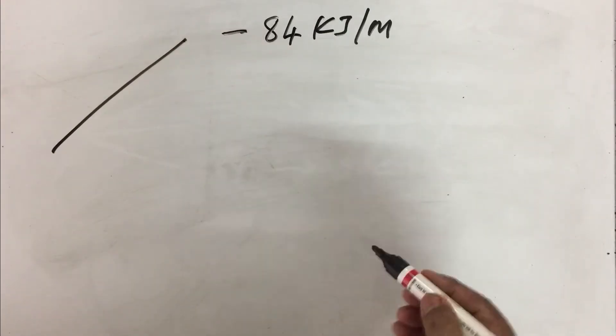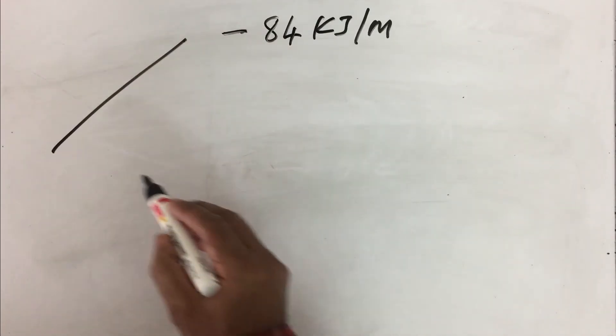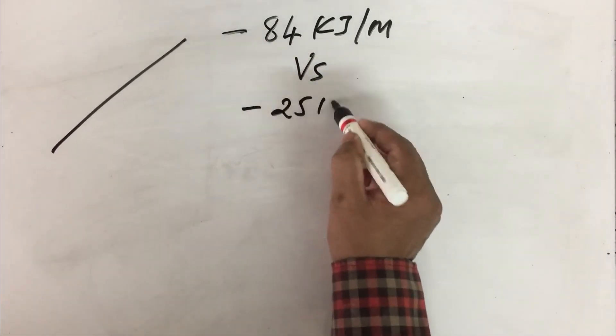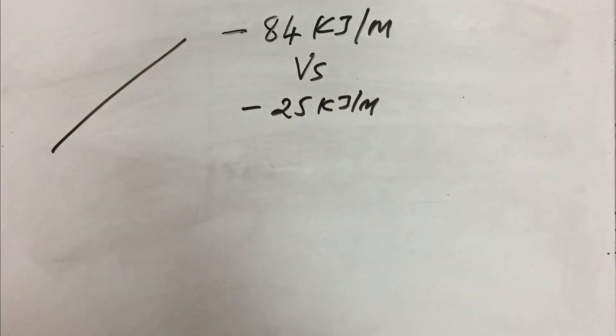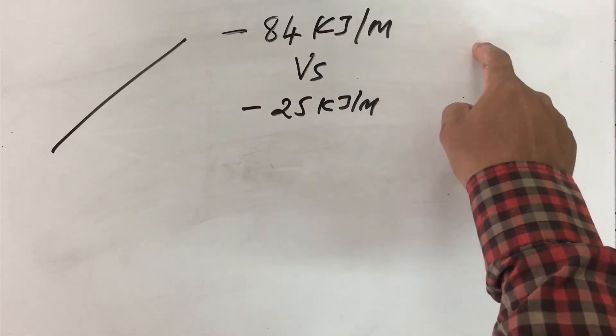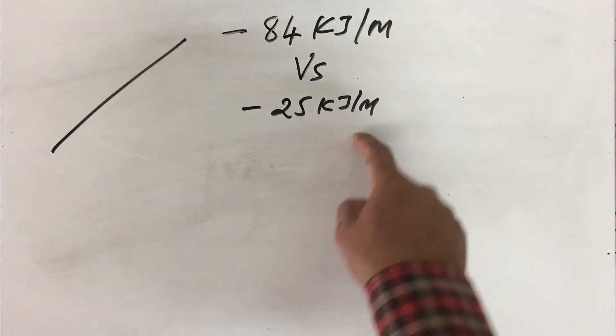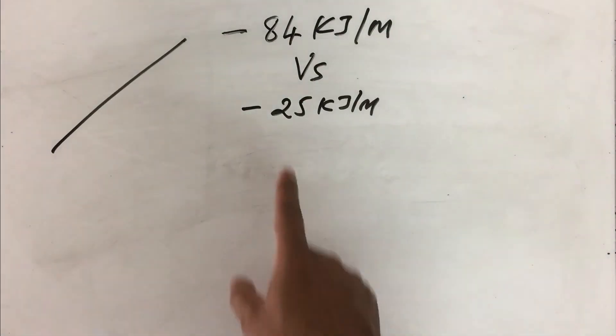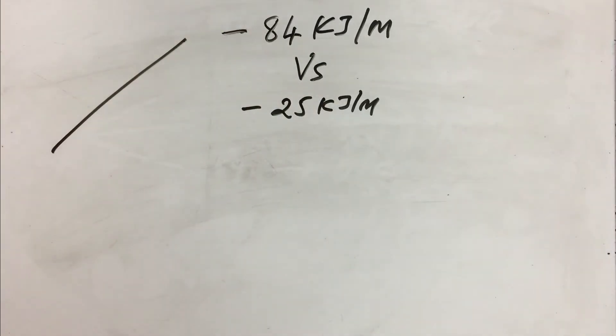The overall energy change in gluconeogenesis is minus 25 kilojoules per mole. Still it is negative. Then only it is feasible. Otherwise, glycolysis is more towards the formation of lactate. Whereas gluconeogenesis we are overcoming that negative delta G and still with a negative delta G of minus 25 kilojoules per mole. Therefore, it is not exactly a reversal.